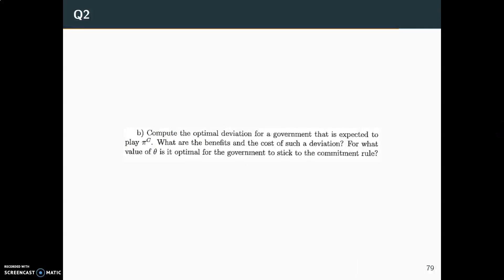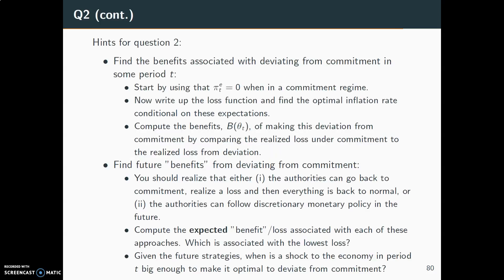Now let's consider question B. It says: compute the optimal deviation for a government that is expected to play π_c — the commitment policy. What are the benefits and costs of such a deviation? For what value of θ is it optimal for the government to stick to commitment? Before I give the answer, I've produced a few hints on the approach that you can use — pause the video and try to solve the question on your own before watching the solution.